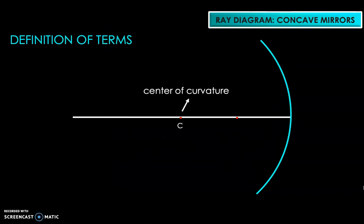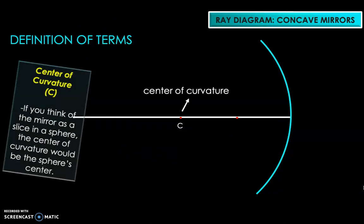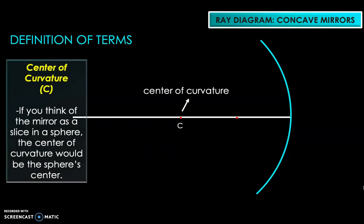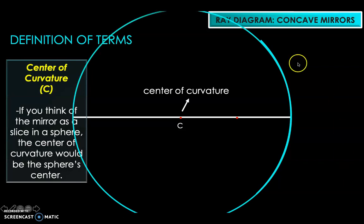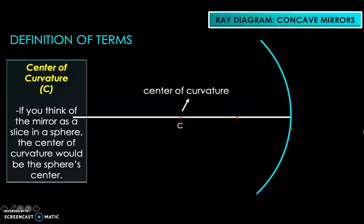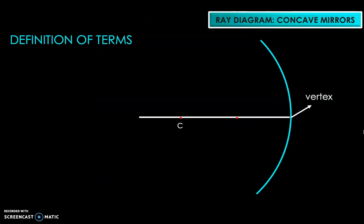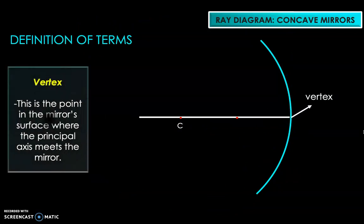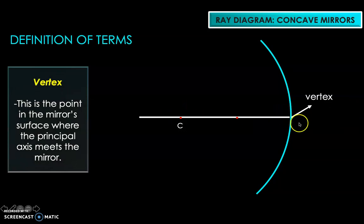Next is the center of curvature. If you imagine the mirror as a part of a sphere, the center of curvature is simply the center of that sphere. Next we have the vertex, which is the point where the principal axis meets the mirror — it's also the geometric center of the mirror itself.